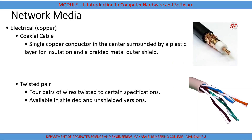Now we have network media — the communication mediums used in a network. First, there are electrical conductors such as copper lines or cables. The first type is coaxial cable, which is a single copper conductor in the center surrounded by a plastic layer, as you can see in the diagram.